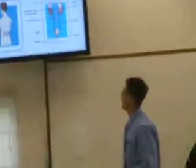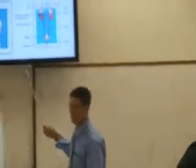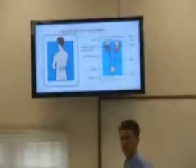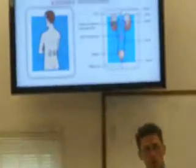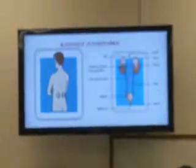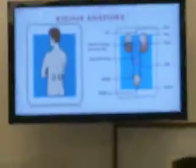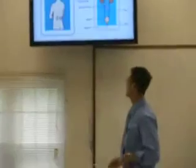First, I'd like to go to the anatomy of the kidney. There are two kidneys in each person — we have one left, we have one right. They're located in the posterior part of the abdominal cavity, located on each side of the spine.